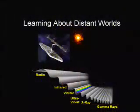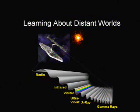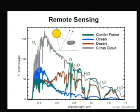To learn about these distant worlds, we go ahead and use the electromagnetic spectrum. We take the light from that star, break it up into its constituent colors, and try to get that spectrum of the planet. We do that by a technique called remote sensing.